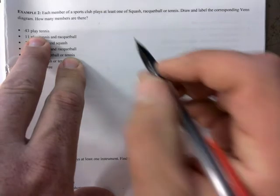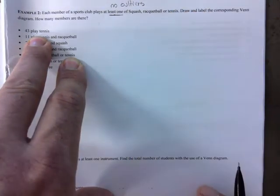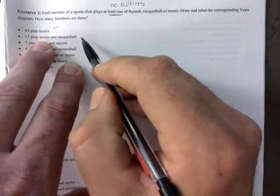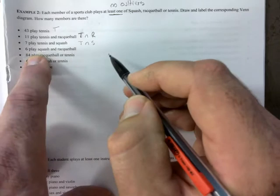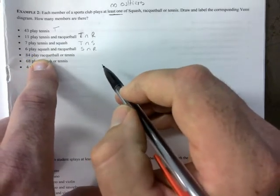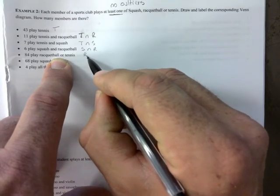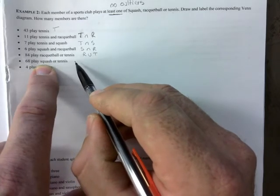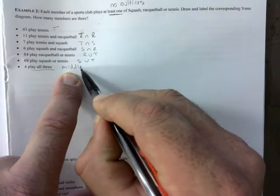So we have tennis, right? We have everybody is at least one. So there are no outliers, right? If you see that, that is code for no outliers. Everything is going to be within the sets that are present. So we have squash, racquetball, tennis. So we've got tennis here. Tennis and racquetball. So, sorry, tennis. Let's go T and R. T and R. T and S, right? Tennis and squash. Squash and racquetball. Oh, there's an or. Do you see that? And, and, or. That stands for union. So what it's saying here, the union of racquetball or tennis would be 84. That's going to be interesting. 68 play tennis, squash or tennis. So squash or tennis. And then four play all three. That's your middle, right? That's the center. Which is nice to have.